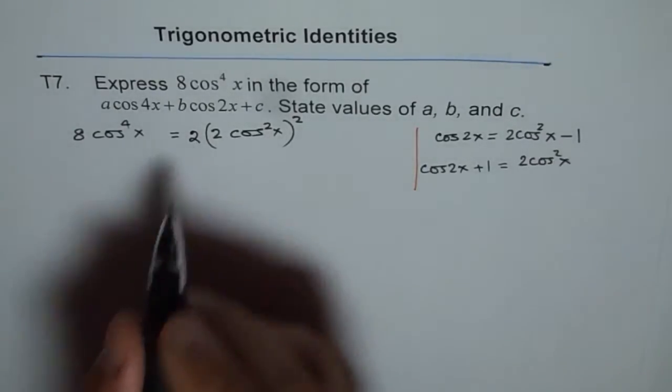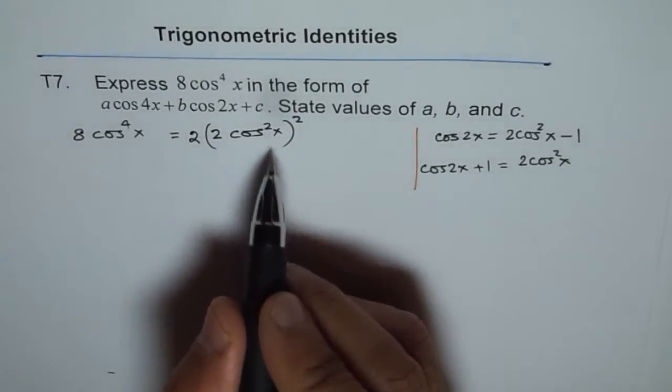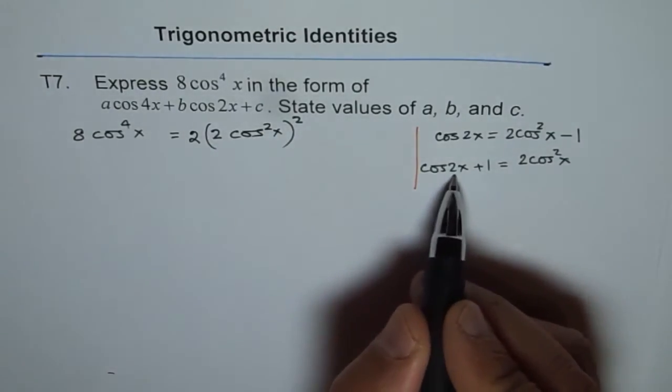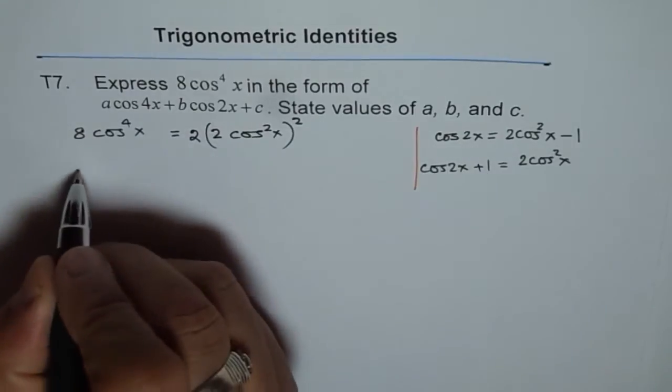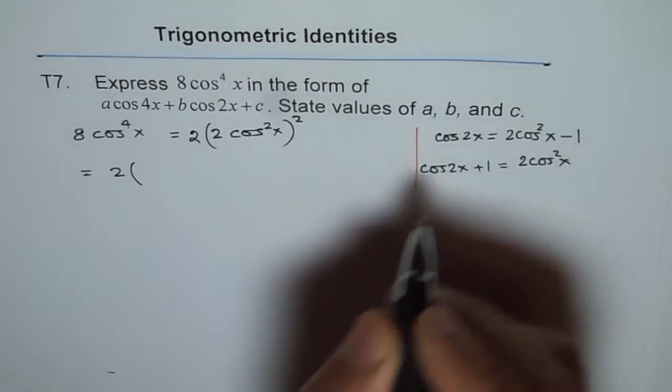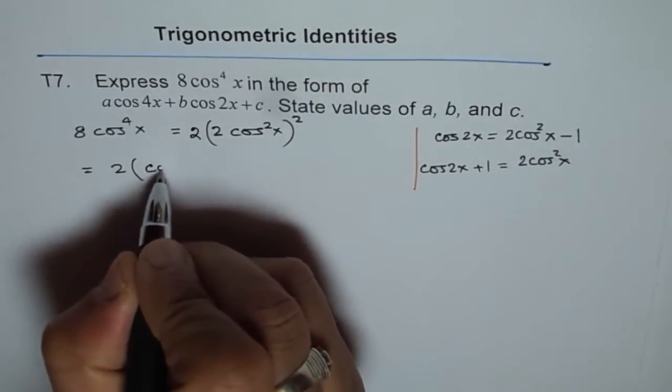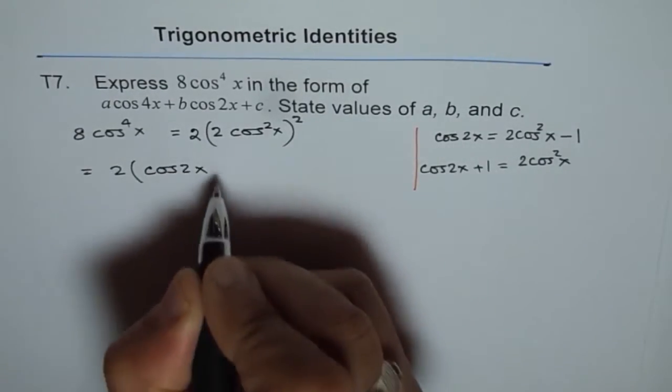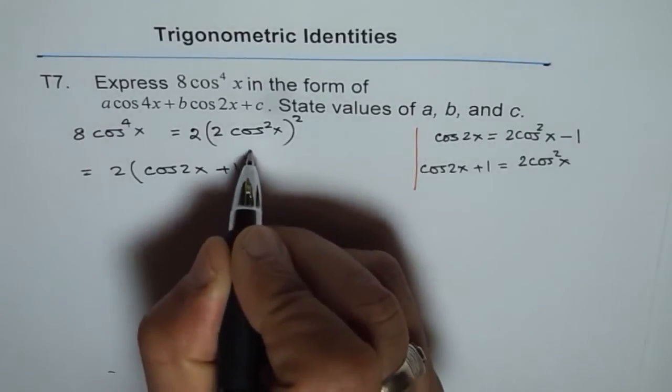Now, so we can now write 2 cos square x as cos 2x plus 1. So let's do that. So we get 2 times, so instead of 2 cos square x, I'm going to write cos 2x plus 1 whole square.